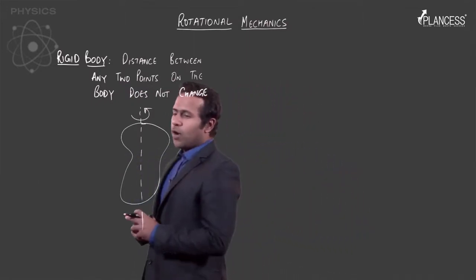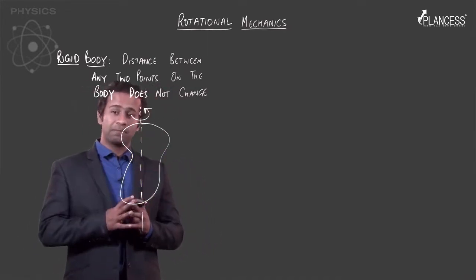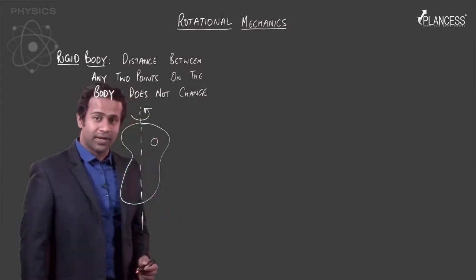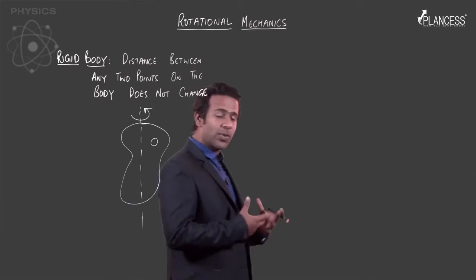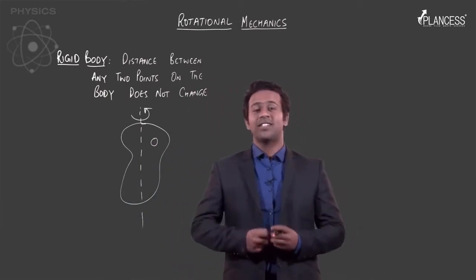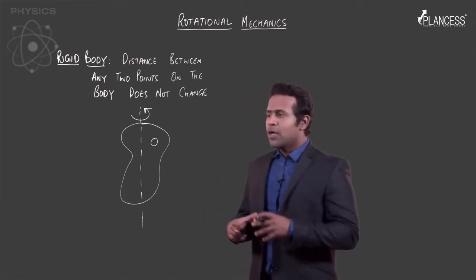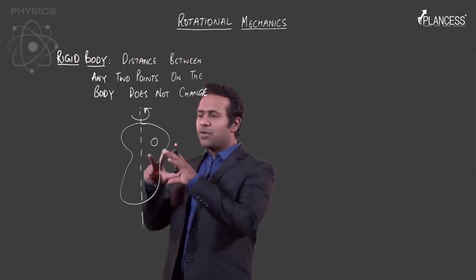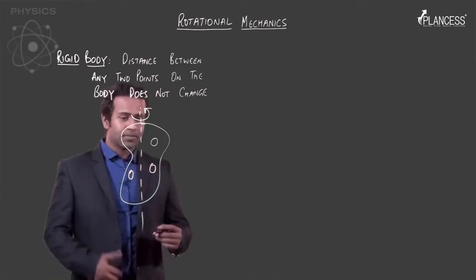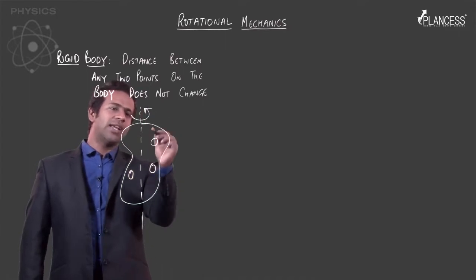First of all, to simplify our calculations, I will assume that this rigid body is made up of a lot of smaller bodies. We have dealt with such situations before. If you want to take such a case, you have to take an infinitesimally small particle and then integrate over the entire body. But right now, I am just viewing this body as a collection of bodies which have finite mass.